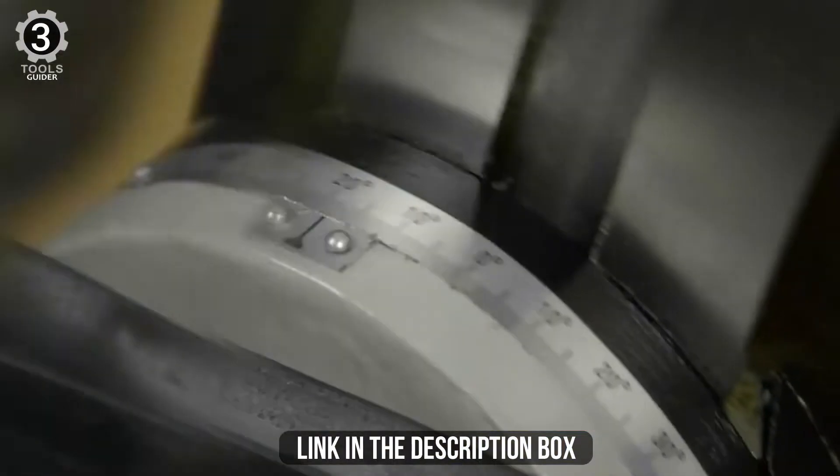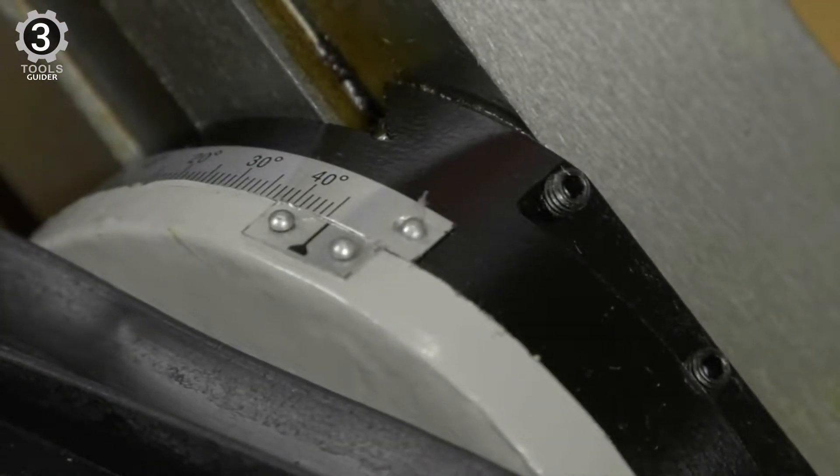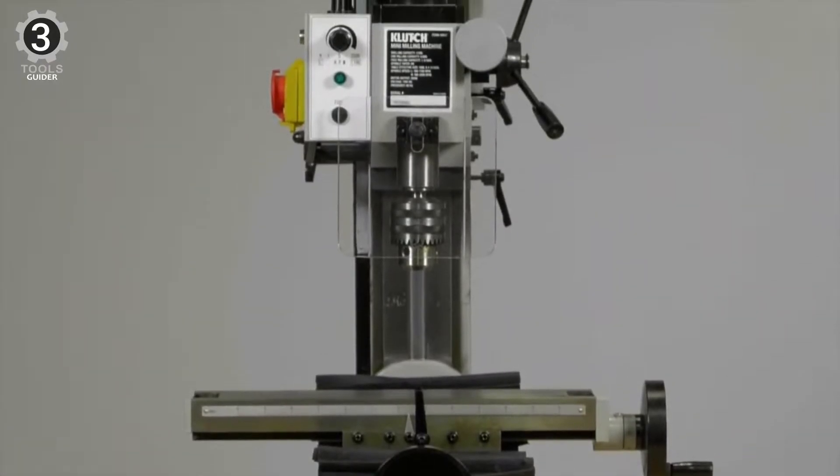The milling head and column have a 45-degree tilt left or right and at around 140 pounds, the unit is much lighter than other similar mills.